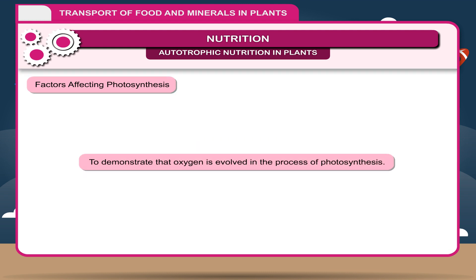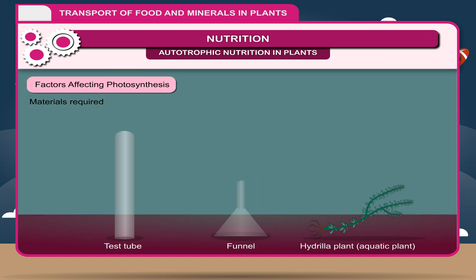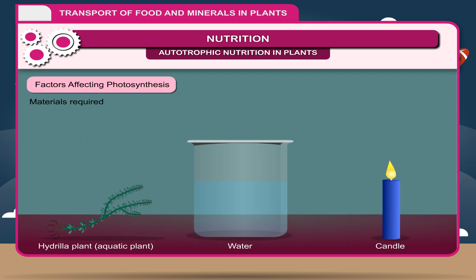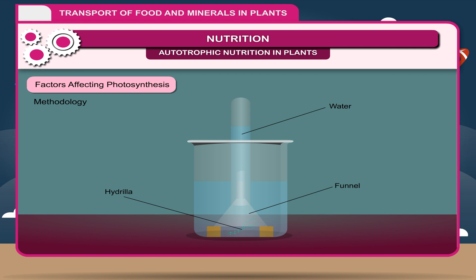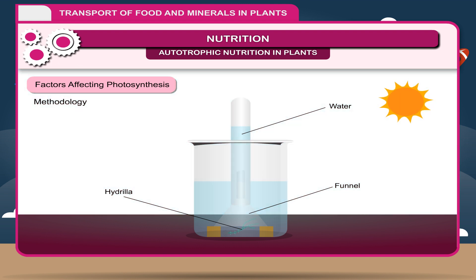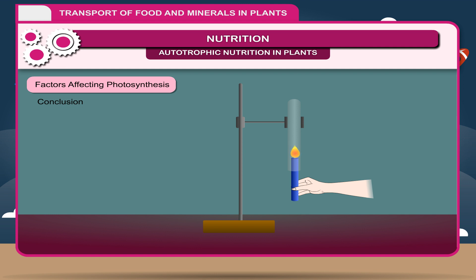Activity: To demonstrate that oxygen is evolved in the process of photosynthesis. Materials required: beaker, test tube, funnel, hydrilla plant (aquatic plant), water, and candle. Methodology: A water-filled beaker is taken with hydrilla plants. Insert hydrilla plants in an inverted funnel. A test tube filled with water is inverted on the funnel. Keep this apparatus in sunlight. Observation: Bubbles of gas are seen which displace the water downwards. Conclusion: This gas can be tested by introducing a burning candle, which remains burning, proving that the evolved gas is oxygen.